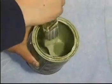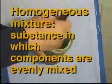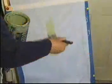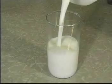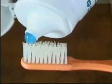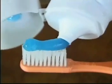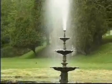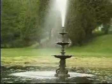Homogeneous mixtures, like this paint, are different from heterogeneous mixtures in that they are well mixed and the same throughout. This milk is a homogeneous mixture in that it is chemically the same throughout. Other examples of homogeneous mixtures include toothpaste. Perfume is also a homogeneous mixture. Having explored the differences between homogeneous and heterogeneous mixtures, let's consider the three types of mixtures: colloids, suspensions, and solutions.